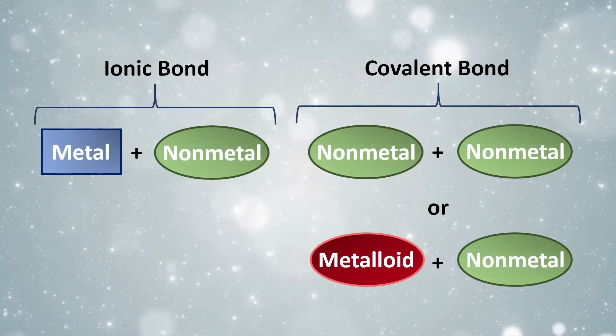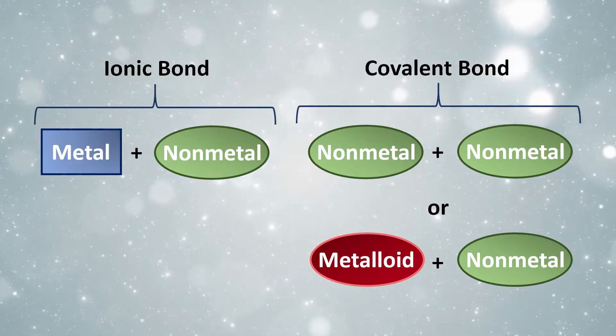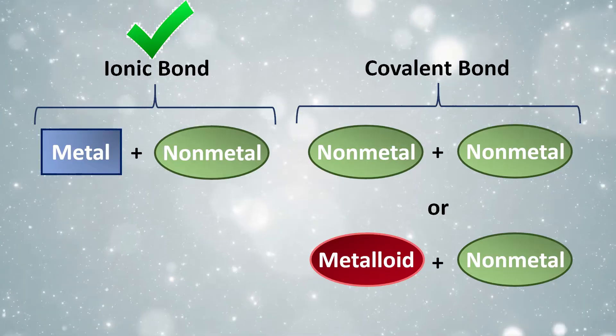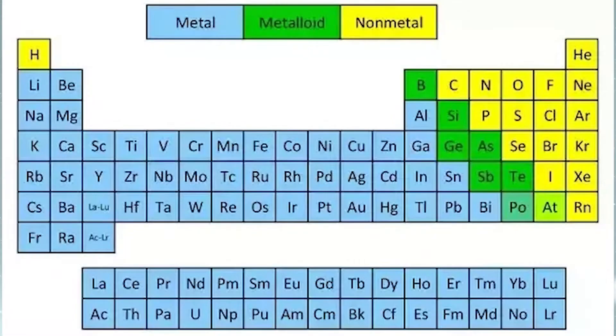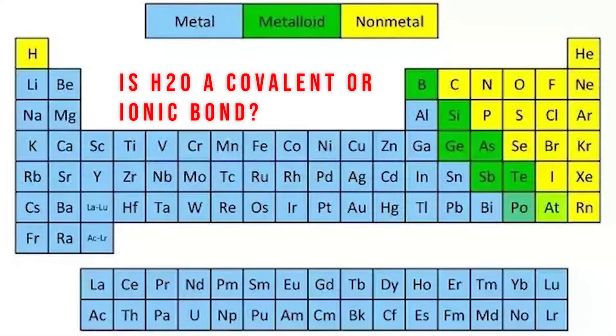First things first, we need to know if the elements involved are both non-metals. If there is a metal and a non-metal, then there would not be a covalent bond — a bond between a metal and a non-metal is called an ionic bond. A bond between two or more non-metals is a covalent bond. We can find this out by looking at our periodic table. Notice that most of your non-metals are on the right side of the periodic table, all except for hydrogen. For example, if a question asked if H2O was a covalent or ionic bond, you can easily look at your periodic table and see that both H (hydrogen) and O (oxygen) are both non-metals, which would let us know that it is a covalent bond.